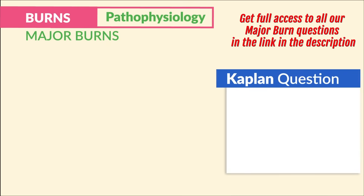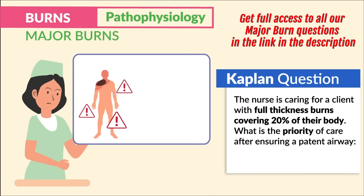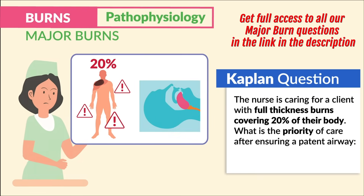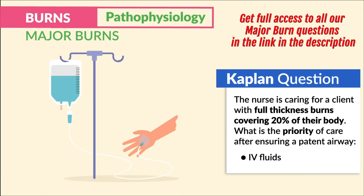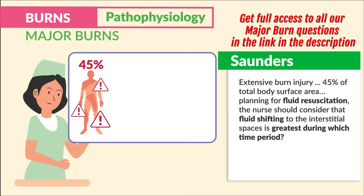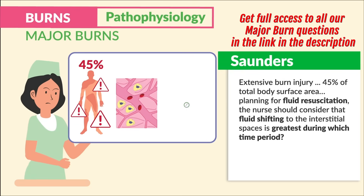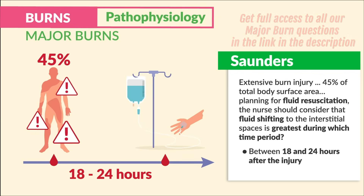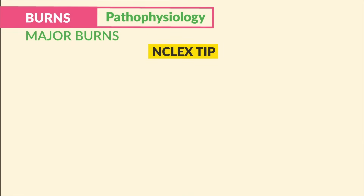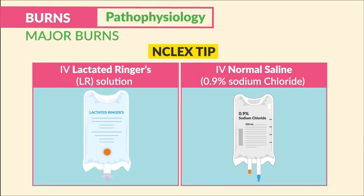Kaplan mentions: a client with full thickness burns covering 20% of their body — what is the priority of care after ensuring a patent airway? IV fluids. Saunders mentions: with extensive burn injury covering 45% of total body surface area, fluid shifts to the interstitial spaces are greatest between 18 and 24 hours after the injury. Fluid resuscitation is priority, with normal saline and lactated ringers as isotonic solutions.